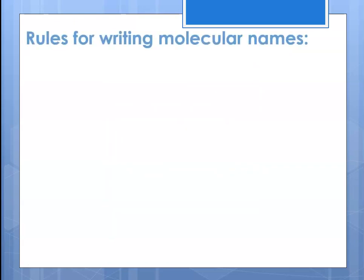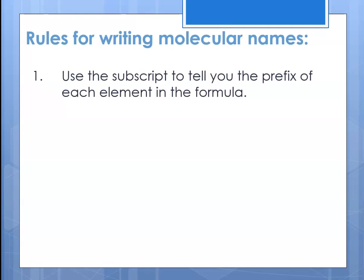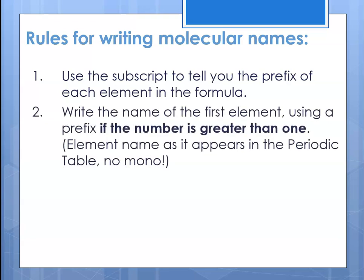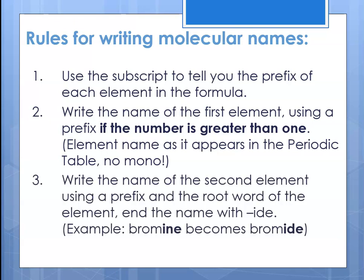There are rules for writing the names for these molecular compounds. The subscript is used to tell you the prefix for each element in the formula. We write the name of the first element using a prefix only if the number is greater than 1 — so if there's just one of the first element, no prefix is used. We write the name of the element exactly as it appears in the periodic table. The second element always gets a prefix, and we have to use the root word of that element.